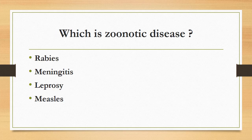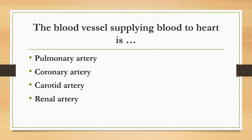Which is a zoonotic disease? Rabies, meningitis, leprosy, or measles? The correct answer is rabies. Rabies is a zoonotic disease — it is a viral disease which is spread from the saliva of an infected animal. The main zoonotic disease example is rabies.